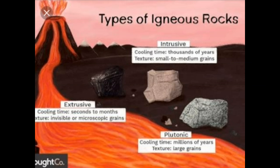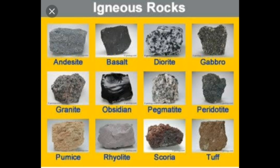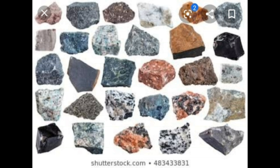Now let's talk about igneous rocks. Igneous rocks are formed where molten rocks from inside the earth rise to the surface, cool, and solidify. Igneous rocks are hard and crystalline in nature. On the basis of their origin, igneous rocks can be divided into two types.